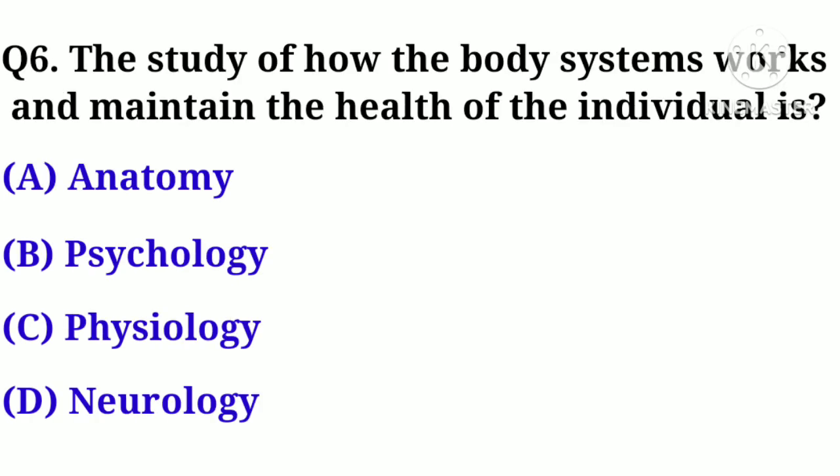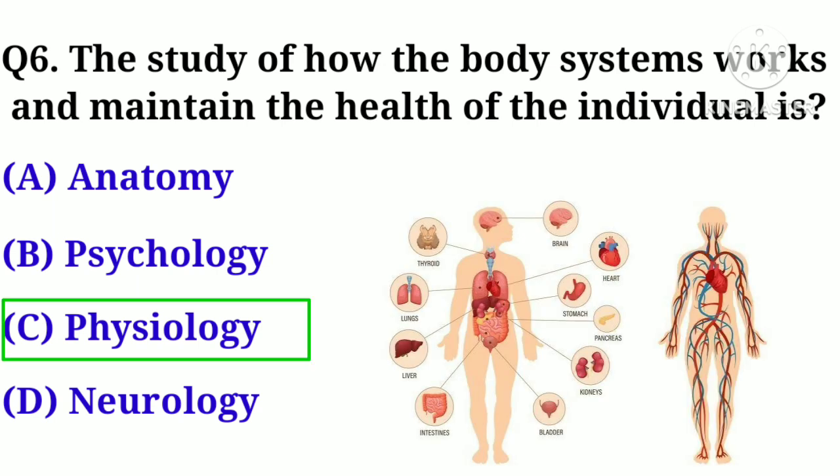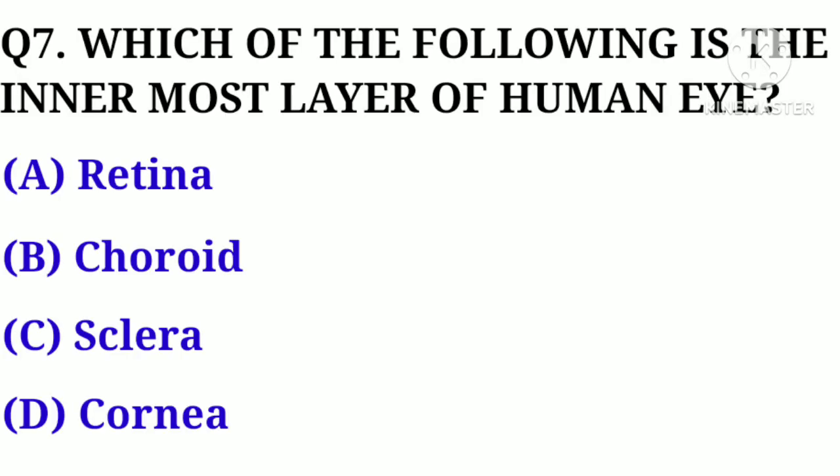Question number 6. The study of how the body system works and maintains the health of an individual is: Option A. Anatomy, B. Psychology, C. Physiology, D. Neurology. Correct answer: Option C. Physiology.